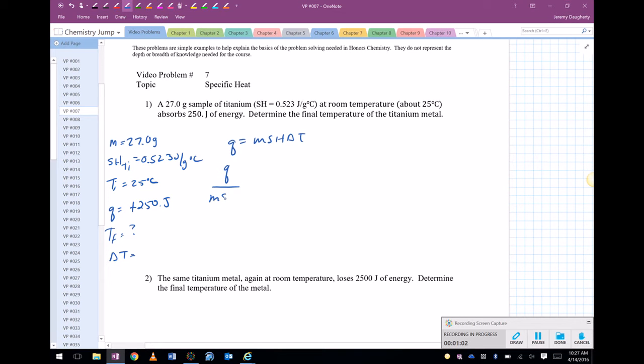It's a plug and chug. We got 250 joules, the mass 27 grams, specific heat capacity 0.523. And in your calculator, 250 divided by the product of 27 and 0.523.